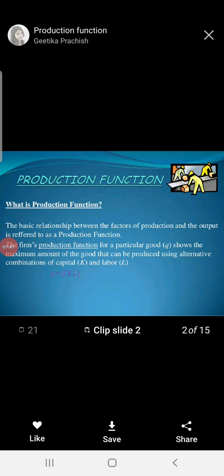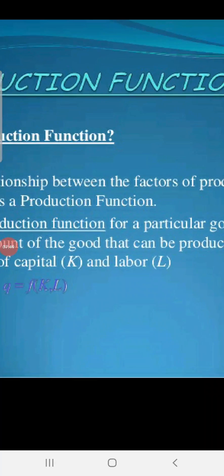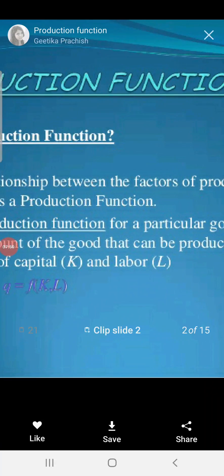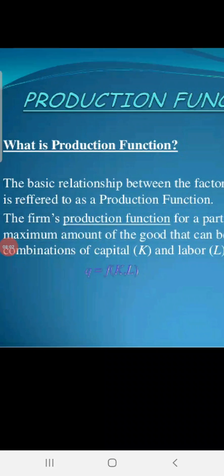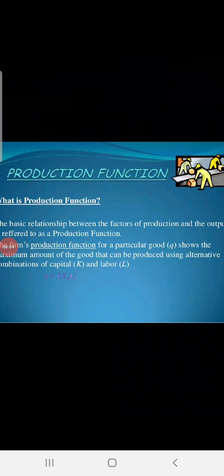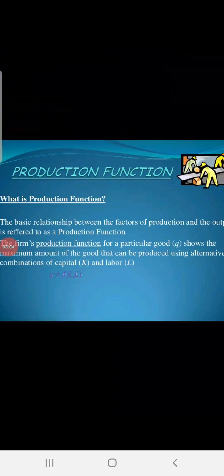The formula is Q is equal to a function of K and L — capital, labor, land, raw material. With the help of those inputs, how much output you are producing is called the production function.